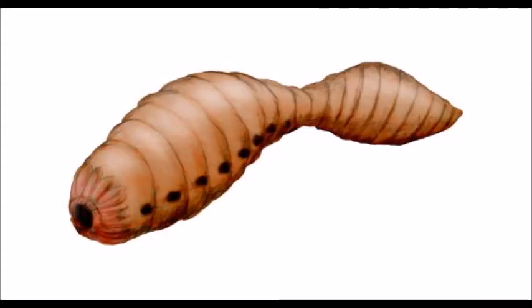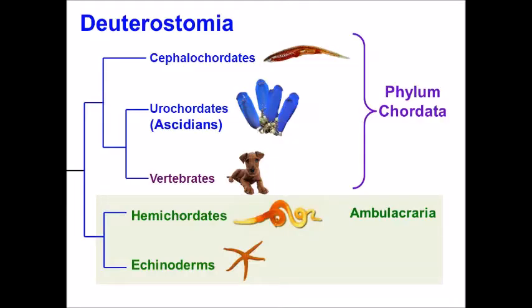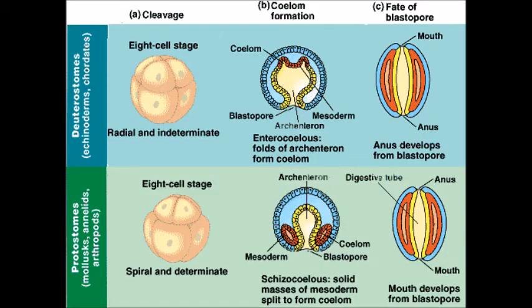Some of the earliest chordates were worm-like animals, such as Didazoon. Chordata is a phylum within the clade Deuterostomia. Deuterostomes are all animals that develop their anus before their mouth embryonically, and the only living non-chordate deuterostomes are grouped within a clade called Ambulacraria, including echinoderms and hemichordates.